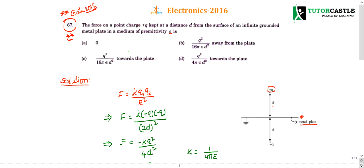Whenever you place a +q charge at a distance d from the metal plate which is infinitely grounded, what happens is the property of this infinite ground metal plate is such that it forms a reflection.